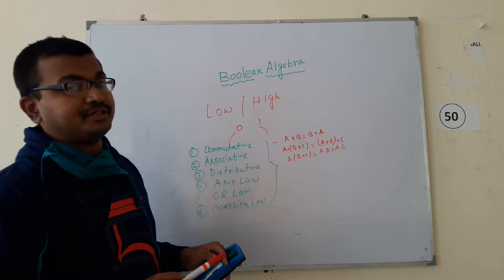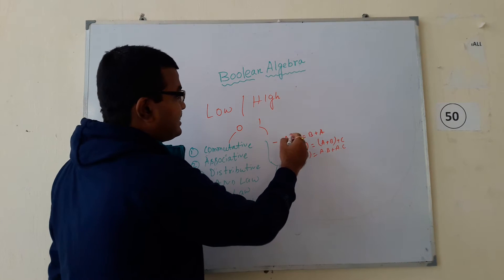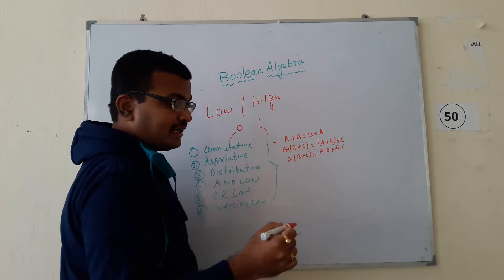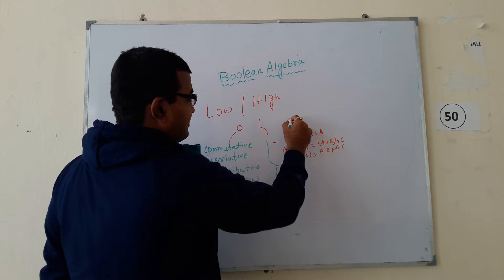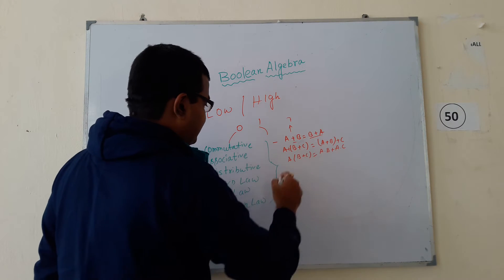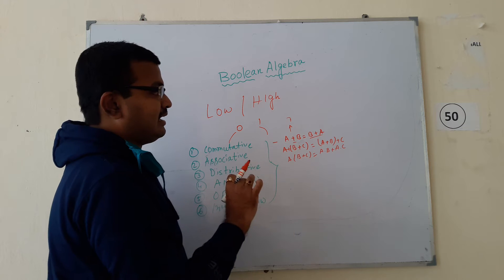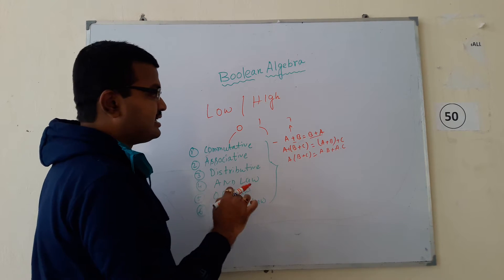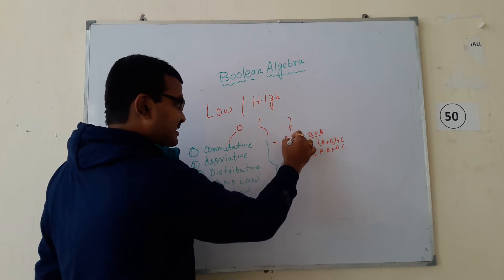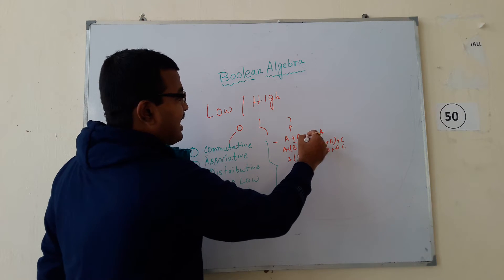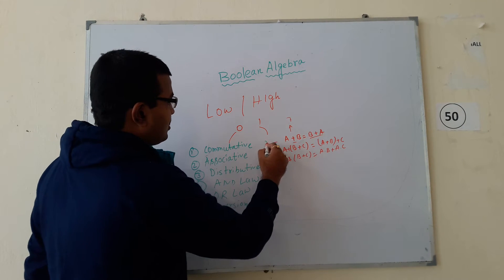In this topic, we will discuss what is commutative law. Commutative law means: suppose A and B are two variables. If we add A plus B, there is a result. This result and the result of B plus A will be the same. Means, if we change the sequence of the variables, the result will not change. A plus B equal to B plus A — this law is known as commutative law.